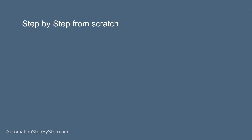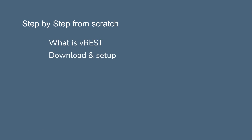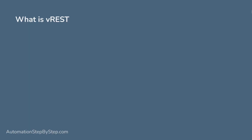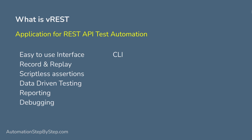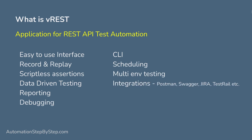In this session, I'm going to go very basic step by step. We are going to learn what is vRest, how to download and set up vRest, we are going to see the GUI and features of the platform, and then we will create our first project and the first test. vRest is a platform for REST API test automation. It has a very powerful and easy GUI, options to record and replay, powerful and easy assertions, data-driven testing, reporting, and debugging.